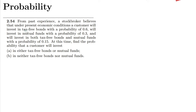This is question 2.54. The statement: from past experience, a stock broker believes that under present economic conditions, a customer will invest in tax-free bonds with probability 0.6, will invest in mutual funds with probability 0.3, and will invest in both tax-free bonds and mutual funds with probability 0.15. Find the probability that a customer will invest in: (a) either tax-free bonds or mutual funds, and (b) neither tax-free bonds nor mutual funds.